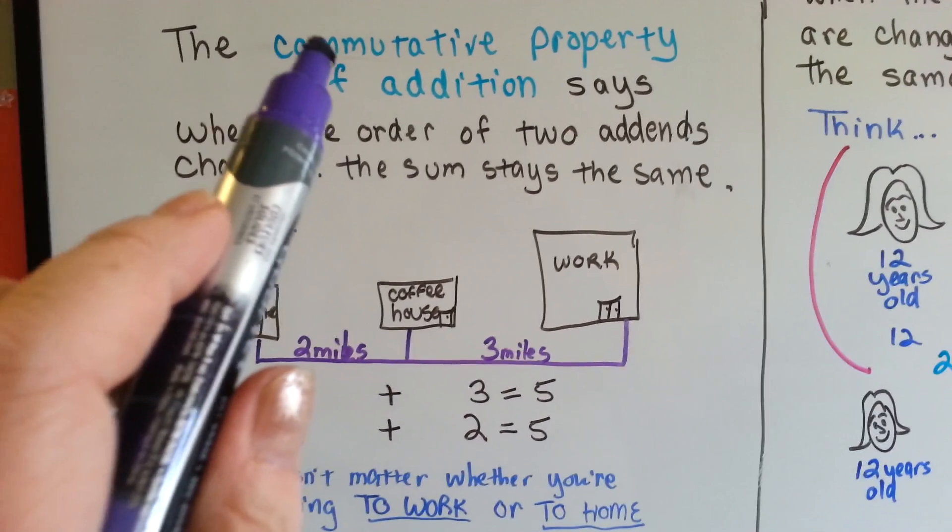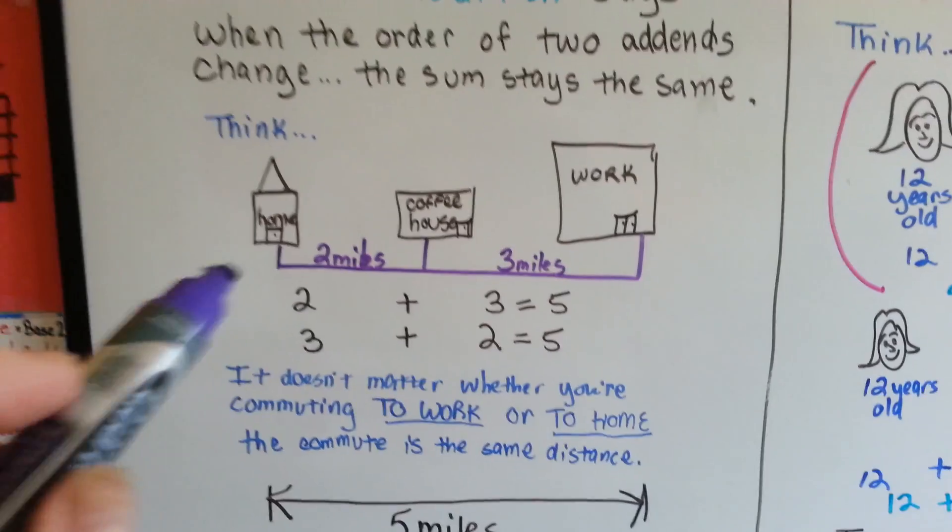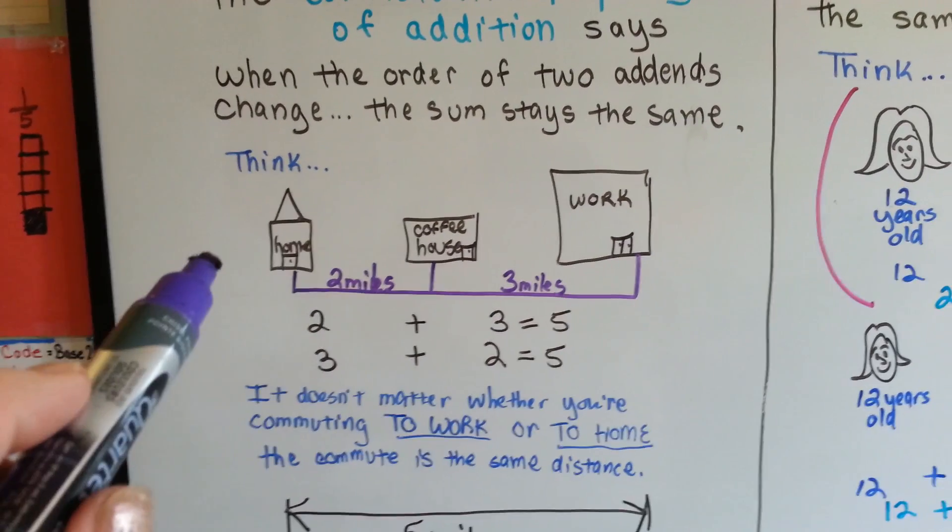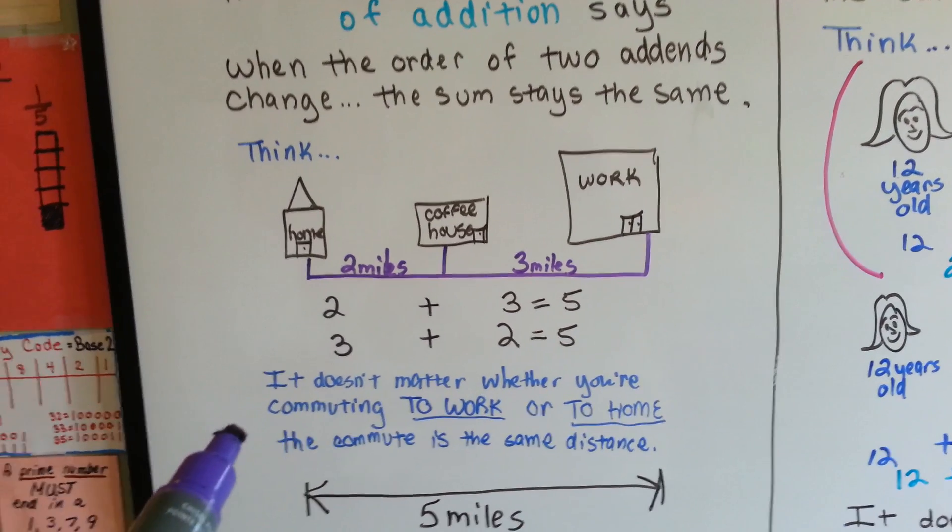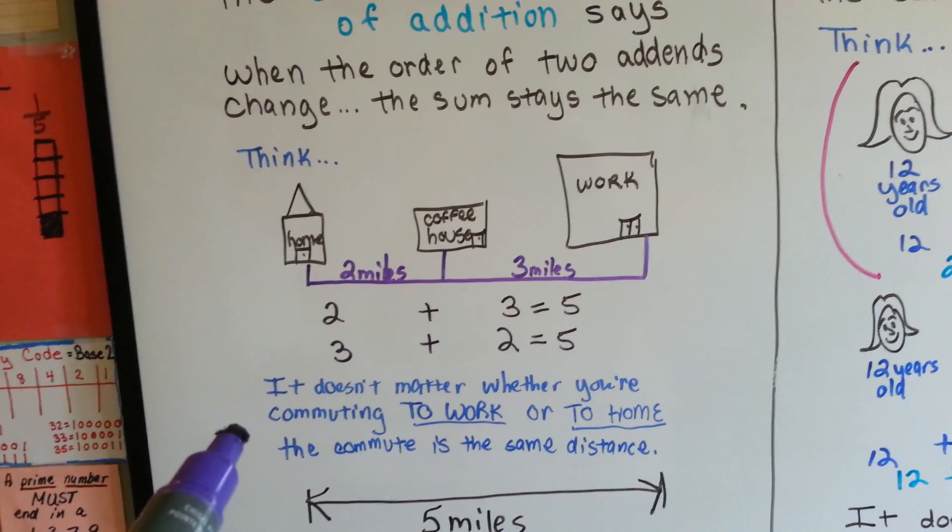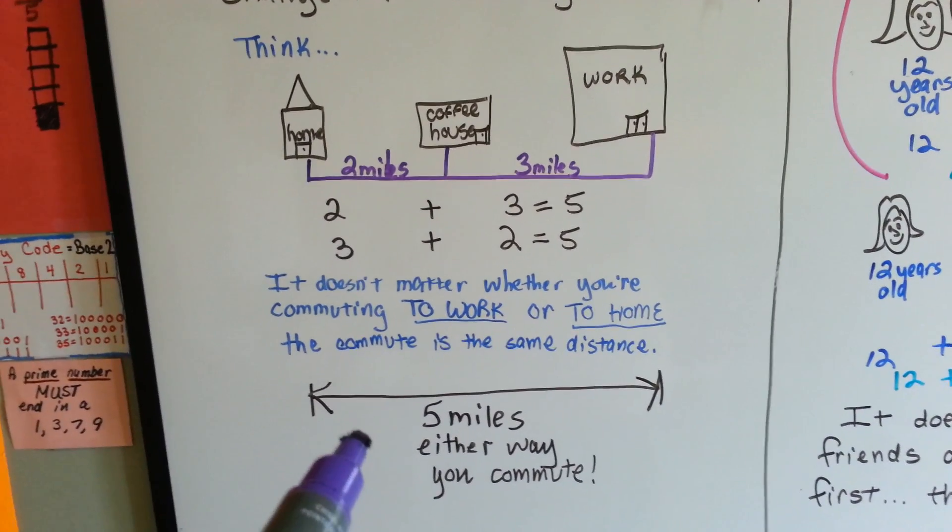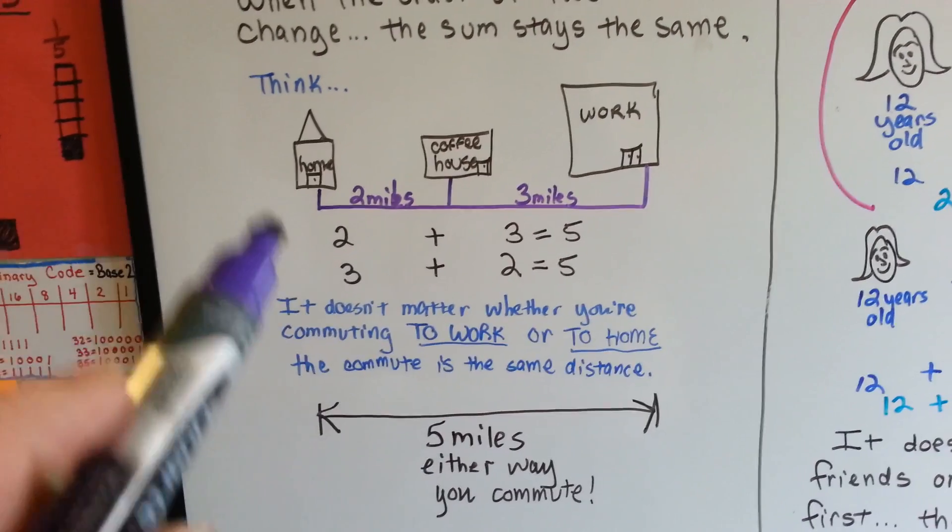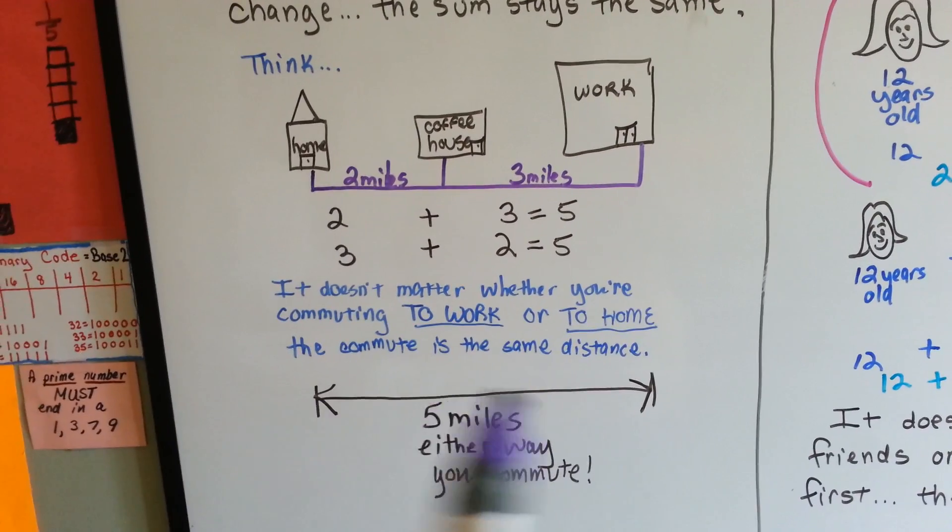So the commutative property of addition is like commuting to work and home or school and home. It doesn't matter whether you're commuting to work or to home. The commute is the same distance. It's still five miles either way you commute. That's the commutative property. Think of commuting.